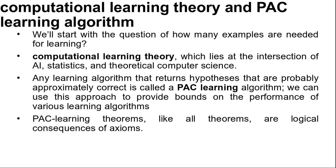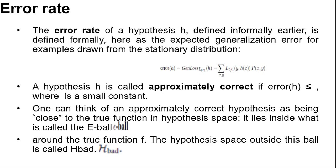PAC learning theorems, like all theorems, are logical consequences of axioms. When a theorem states something about the future based on the past, the axioms have to provide all details to make that connection. For PAC learning, all details are provided by the stationary assumptions, which say that the future examples are going to be drawn from the same fixed distribution probability as past examples. In addition, to keep things simple, we will assume that the true function F is deterministic and is a member of the hypothesis class H that is being considered.